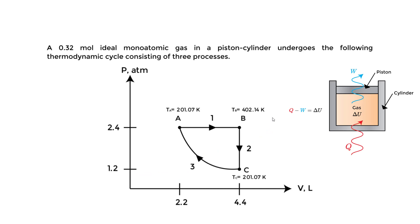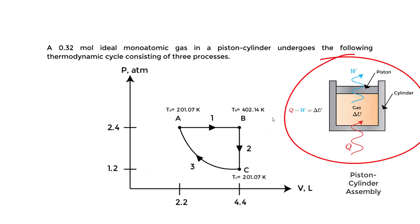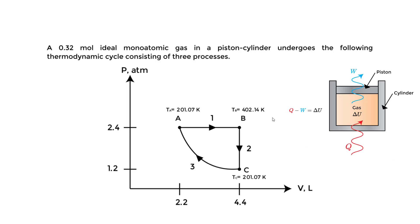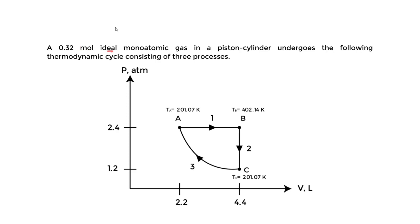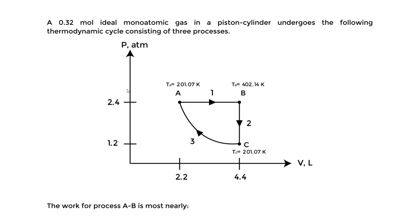Let's look at a piston cylinder assembly that goes through a cycle, specifically consisting of three processes. We have a 0.23 molar ideal monatomic gas in a piston cylinder, and it undergoes the following thermodynamic cycle consisting of three processes.